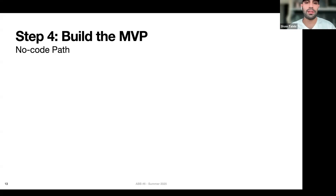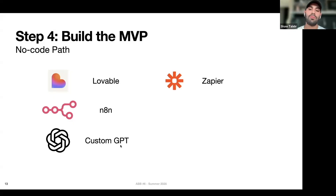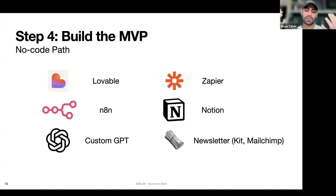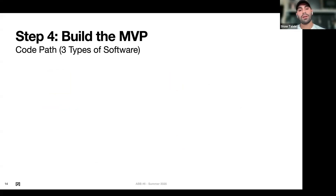Step four is actually building the MVP. There are so many options today — it's never been easier to build an MVP that's actually valuable. Tools like Lovable and n8n are super viral and popular. The custom GPT we mentioned is another option. But it doesn't have to be AI tools — it can be pretty basic stuff like a Zapier automation, a Notion dashboard, or even a newsletter where you curate information and send it out to people. An MVP can look a lot of different ways and doesn't have to be restricted to just building a website or web app. The no-code path is the fastest, but comes with limited customization.